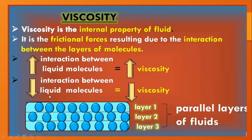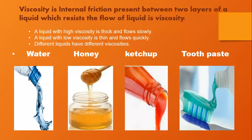When interaction between liquid molecules is low, molecules show less viscosity. Liquid molecules move in the form of parallel layers. Viscosity is the internal friction present between layers which resists the flow of liquid. A liquid with high viscosity is very thick and flows very slowly, like honey. A liquid with low viscosity flows quickly. Different liquids have different viscosity.